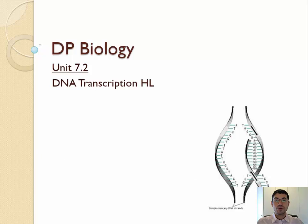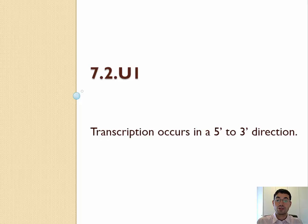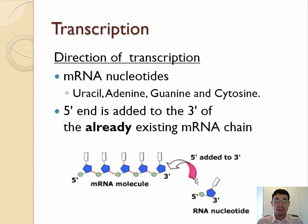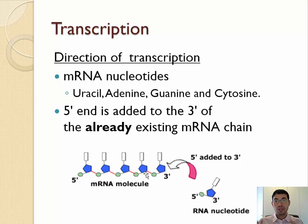Let's dive straight into that first assessment statement about transcription — namely, that it occurs in the 5' to 3' direction. What that means is that while transcription is happening, RNA polymerase can only add new nucleotides to the 3' end of an existing mRNA strand. So just like for DNA replication, the enzyme can only work in the 5' to 3' direction — and we are talking about the new strand, not the old strand.